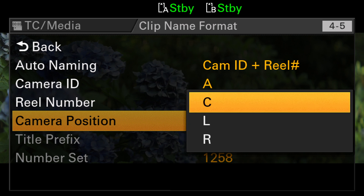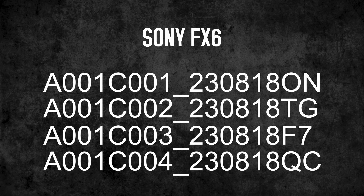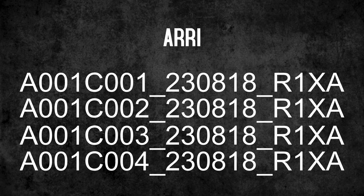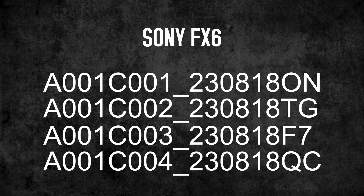The filenames then look like this. In this case, 23 represents the year, 08 the month, and 18 the day. By the last two digits, I'm a bit confused. With ARRI, these represent the camera ID and they're always the same for the same camera. With Sony, they seem random.